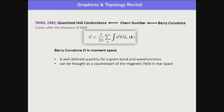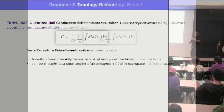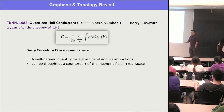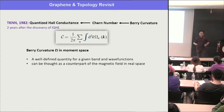The Chern number is the integral of the Berry curvature over momentum space for the occupied bands. The Berry curvature is a well-defined quantity for a given band. If you know the Bloch band energy dispersion and wave functions, you can determine the Berry curvature omega. Physically, the Berry curvature in momentum space as a function of k can be seen as a counterpart of the magnetic field in real space — effectively a fictitious magnetic moment.